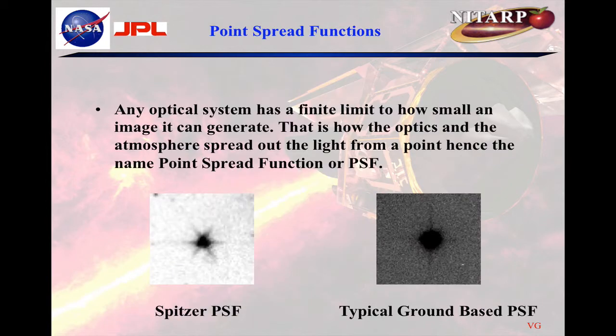The reality is that any optical system — whether it's your camera, the Spitzer Space Telescope, or the Hubble Space Telescope — has a finite limit on how small an image it can generate. This is how the optics and the atmosphere spread out the light from the point spread function. From the point, the point spreads out — it's called the point spread function. On the left here we have the Spitzer PSF, and this is a typical ground-based PSF. These little things coming off of it relate to the optical system — what holds up the secondary mirror scatters light, giving that structure. On the ground, the reason it's a blob is fundamentally because the atmosphere spreads things out.